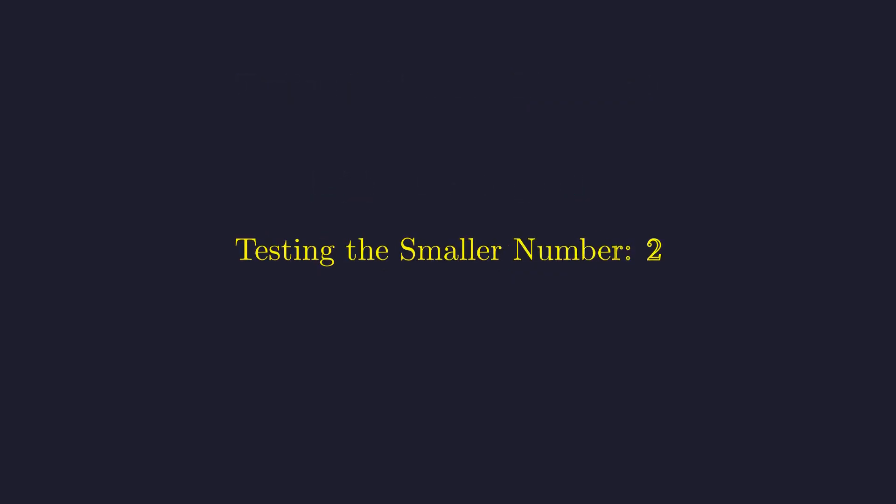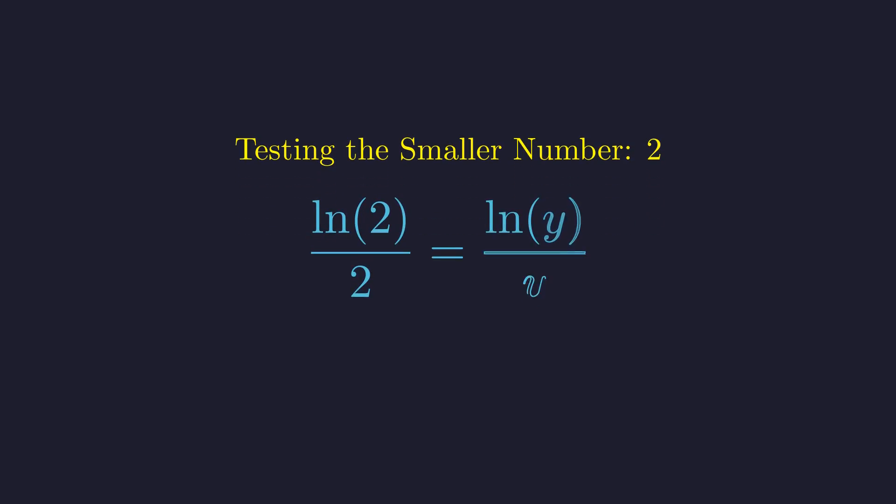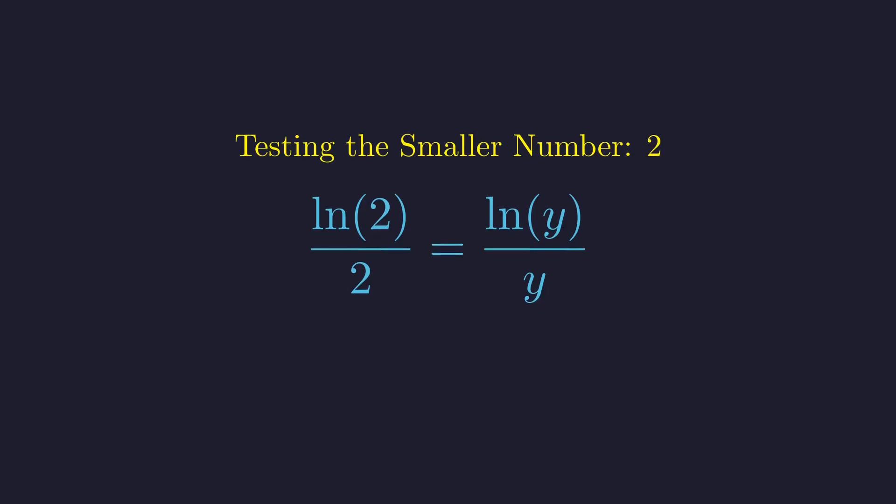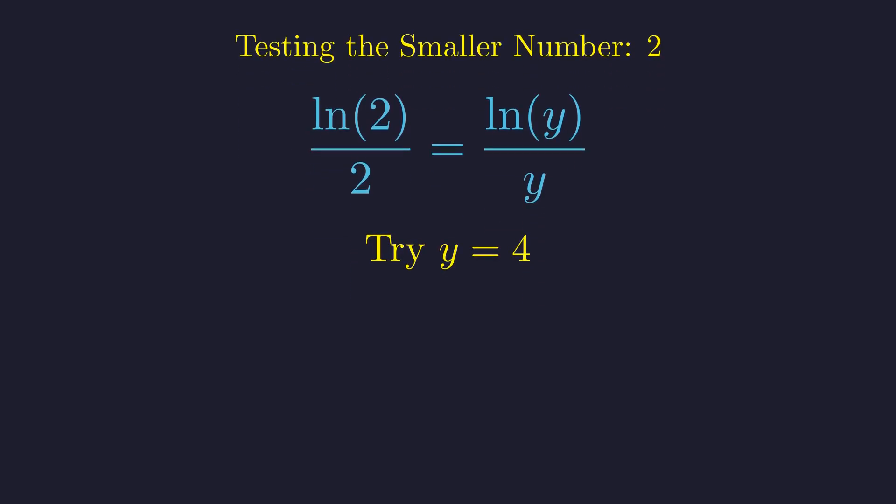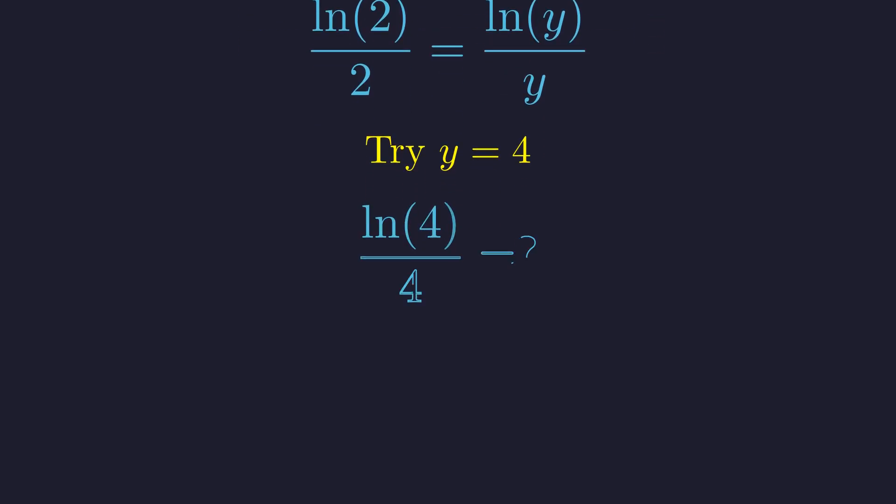That leaves us with just one possibility for the smaller number. Let's see if x equals 2 works. Now we need to find an integer y greater than e that makes this equation work. Let's try some values. Since y must be greater than about 2.7, let's try y equals 4.